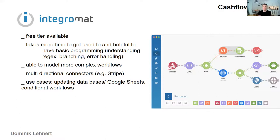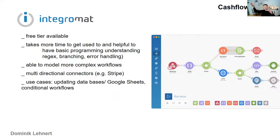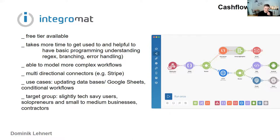Also if you want to update records in databases, Integromat is a lot easier. For example with Google Sheets: adding a row is easy in both tools, but if you want to update a specific row you first have to find the correct row and field, maybe calculate a new value using other data in the spreadsheet. That's a lot easier in Integromat. So if you find yourself hitting the limits of Zapier, just go to the next step and try Integromat.